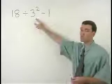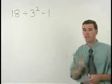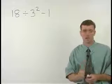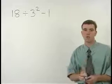So let's take a look at the exponent part of this problem, 3 squared. Remember that any number squared is that number times itself, so 3 squared is just 3 times 3, or 9.